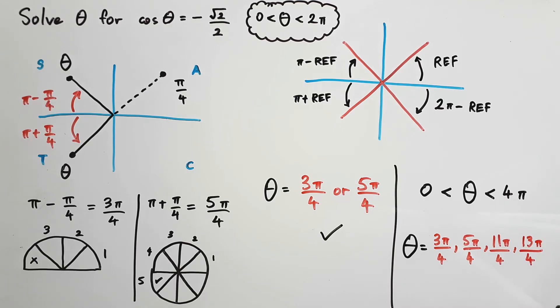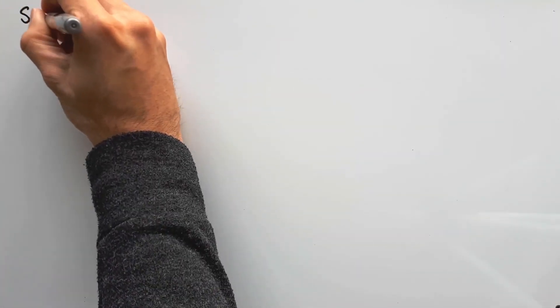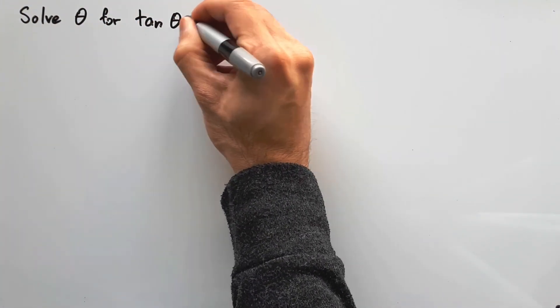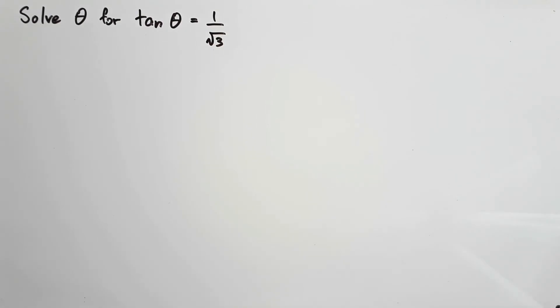Okay, let's check out tangent theta real quick. It's very similar. Solve theta for tan θ = 1/√3 given theta is between 0 and 2π. If you want to try it on your own first, you can pause the video right now.